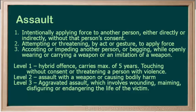The Criminal Code classifies assault according to three levels of severity. Level 1, a hybrid offence, carries a maximum of five years — this is touching without consent or threatening a person with violence. Level 2 is assault with a weapon or causing bodily harm, injuring a person in a way that has serious consequences for that victim's health or comfort. Level 3, aggravated assault, involves wounding, maiming, disfiguring, or endangering the life of the victim.